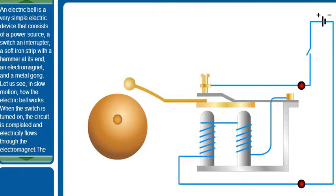An electric bell is a very simple electric device that consists of a power source, a switch, an interrupter, a soft iron strip with a hammer at its end, an electromagnet and a metal gong.